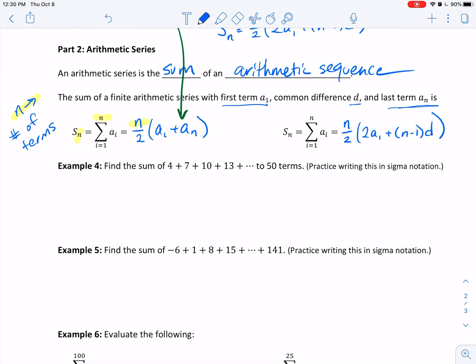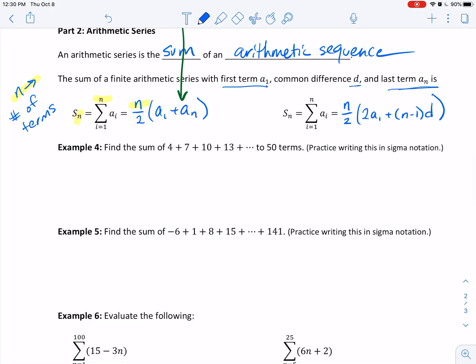We use both formulas, it just depends on what we're given. For example, on this first example number 4, it says find the sum of 4 + 7 + 10 + 13 + ... up to 50 terms. We can figure out, we don't even know what our rule is. I recognize my first term is 4, I have a common difference of 3, I'm adding 3 each time, and I need a total of 50 terms. If these are the things I have, I have to decide which equation I want to use. I don't know a_n, but I do know d, so I'm going to use the second formula.